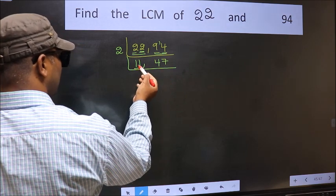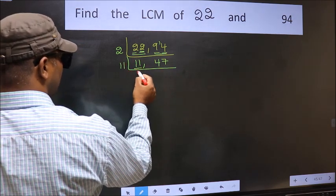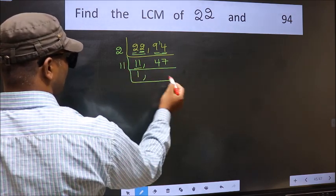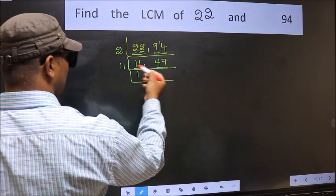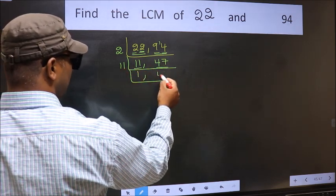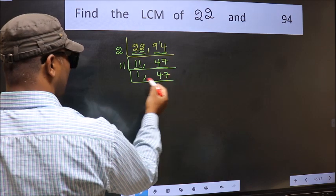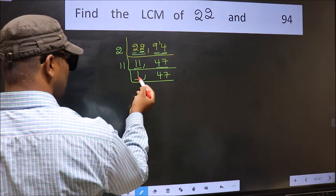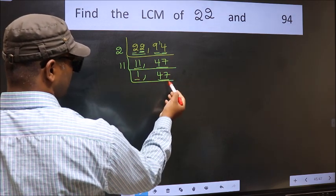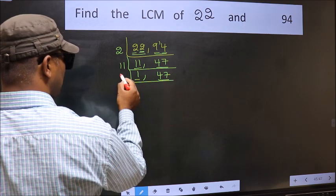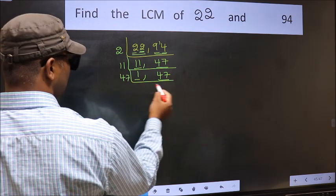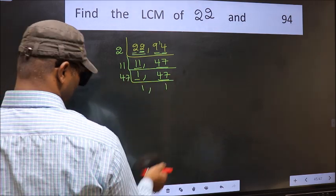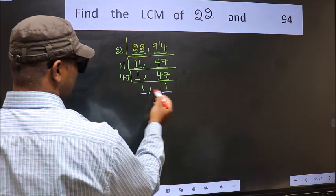Now here we have 11. 11 is a prime number, so 11 times 1 is 11. The other number 47 is not divisible by 11, so we write it down as it is. We got 1 here, so focus on the other number 47. 47 is a prime number, so 47 times 1 is 47. So we got 1 in both places.